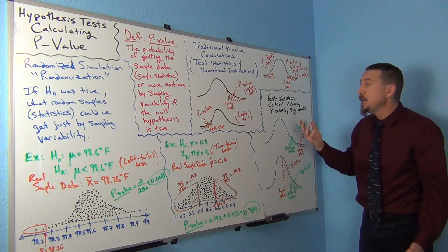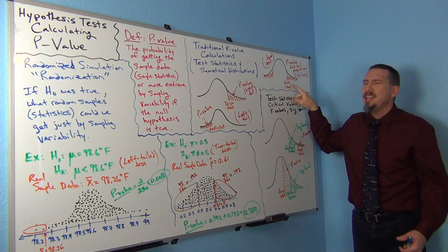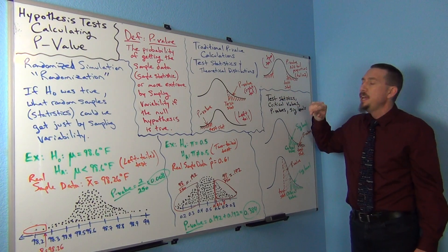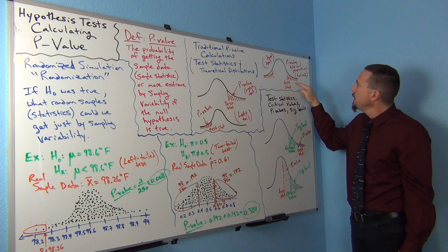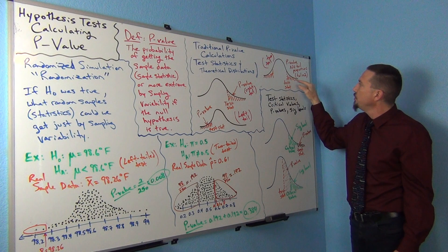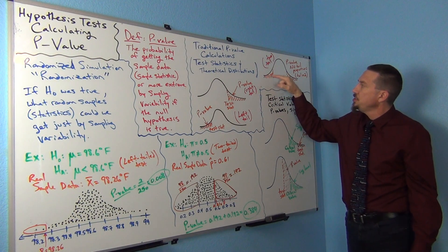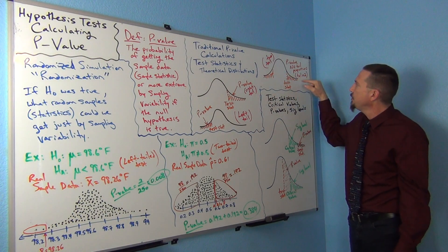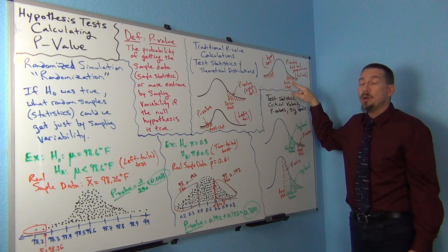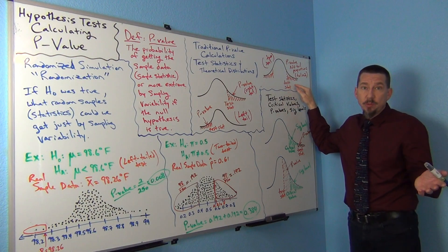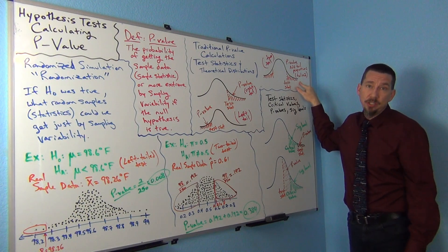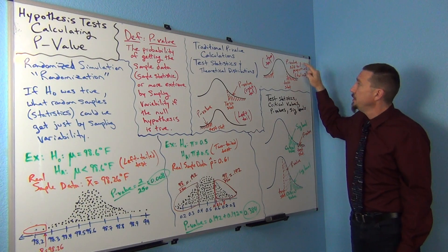If it was a two-tail test, it works the same way. If your test statistic is on the far right, put it there; if it's on the left, put it there. It'll calculate the percentage in the tail and duplicate it on the other side. So you'll get a proportion from the left tail and the right tail, and you have to add them together to get the p-value. In the old days, we would just find the percentage in one tail and multiply that percentage by two to get our approximate p-value.